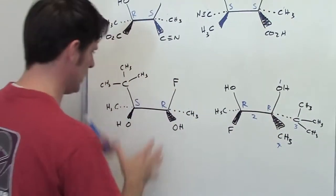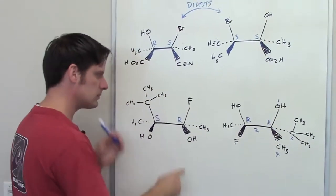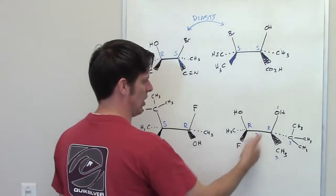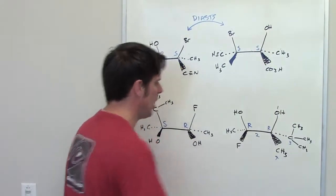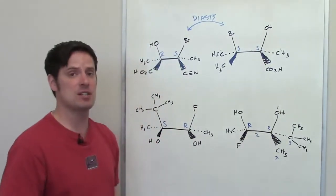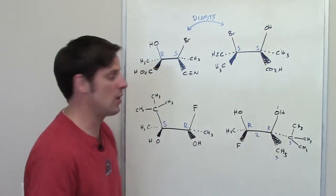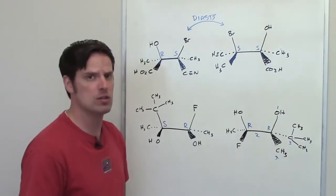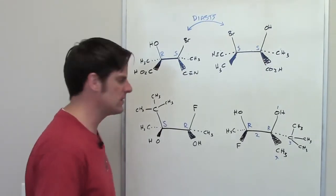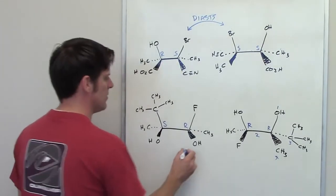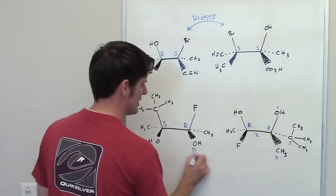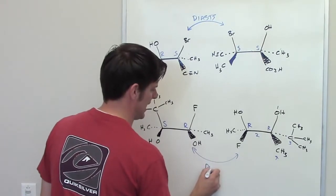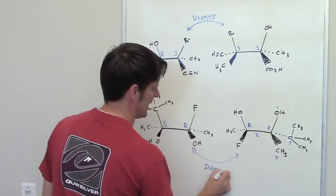So the molecule to the left is SR, and the molecule to the right is RR. Are they exact opposites? No. Are they exactly the same? No. Which means they are also diastereomers.